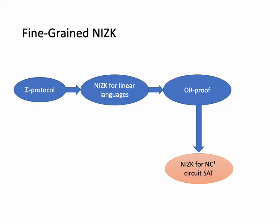This is the roadmap of our construction. First, we construct a sigma protocol, and then we compile this sigma protocol to a NIZK for linear languages. Afterwards, we compile this NIZK for linear languages to an OR-proof, and by making use of this OR-proof, we achieve our NIZK for NC1 circuit satisfiability.